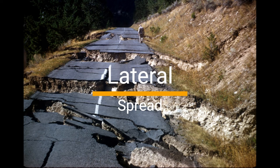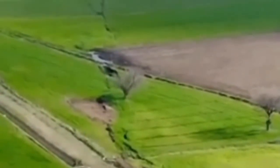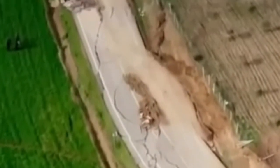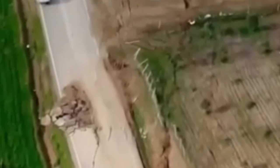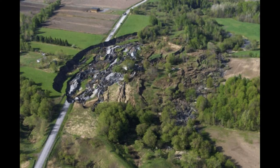A lateral spread landslide, also known as a lateral spreading or a flow slide, is a type of landslide that involves the horizontal movement of soil and rock on a gentle slope. Unlike vertical landslides, which involve the downward movement of material, lateral spread landslides move laterally or horizontally. They can be triggered by a variety of factors, including heavy rainfall, earthquakes, and changes in groundwater levels. The movement is typically slow and progressive, but it can be very destructive, especially if it occurs in urban areas or in areas with infrastructure.